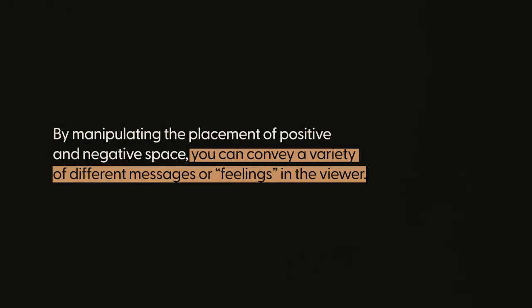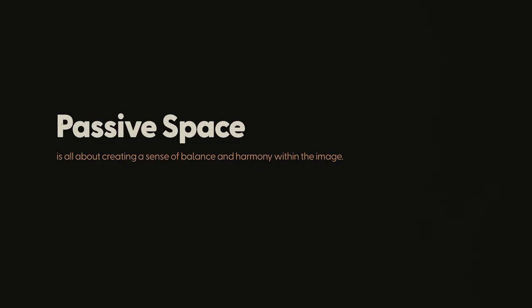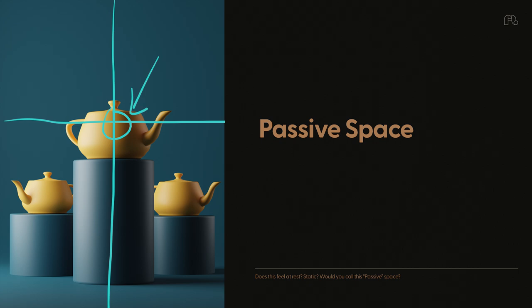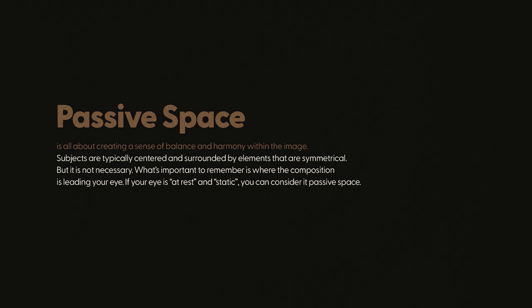By manipulating the placement of positive and negative space, you can convey a variety of different feelings in the viewer. There are two more terms that are just as important, if not more, than positive and negative space. If you want to create a feeling of rest, a static image, or a feeling of stability, you might use what's called passive space. Passive space is all about creating a sense of balance and harmony within the image. Elements do not need to be completely symmetrical to be considered passive space — it's all about where the composition is leading your eye. If it's at rest and static, it's passive space.